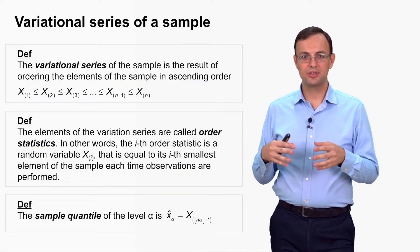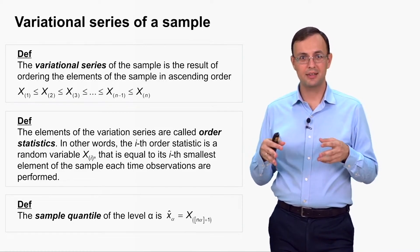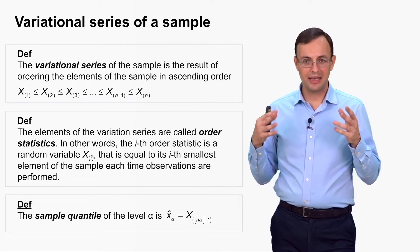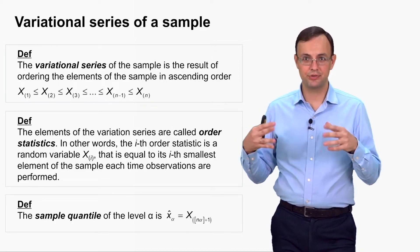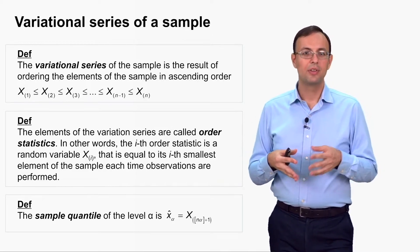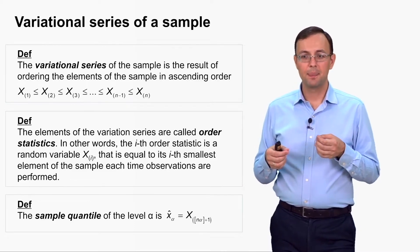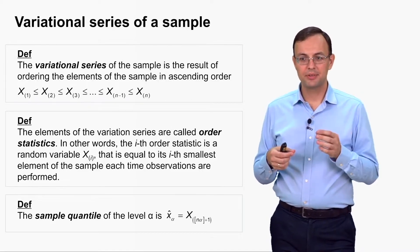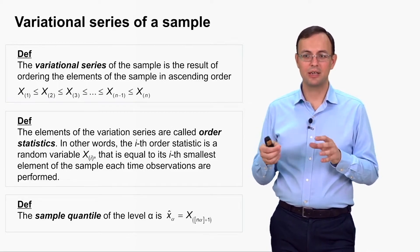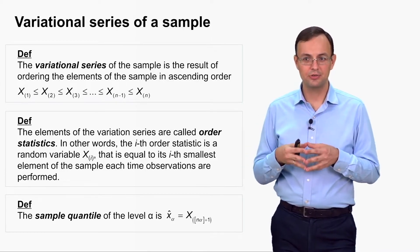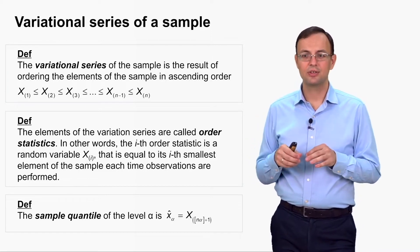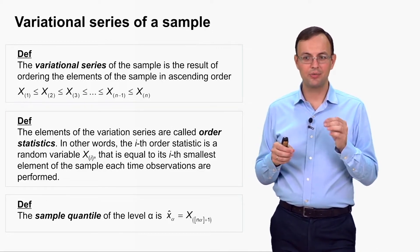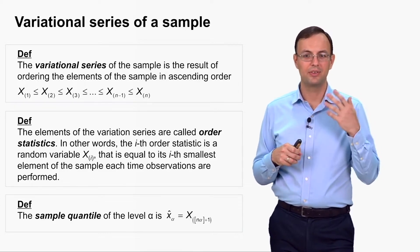Once we have defined order statistics, we can define the sample quantile. Not only the expected value and variance, but all numerical features including quantiles can be estimated from a sample. The sample quantile of level alpha equals the order statistic with index equal to the integer part of n times alpha, plus one. The square brackets denote the integer part, so you take the integer part of n·alpha, add one, and take the corresponding order statistic.